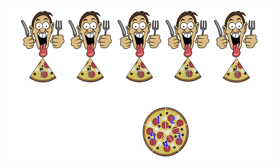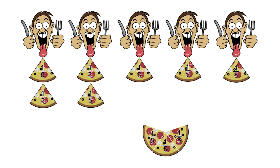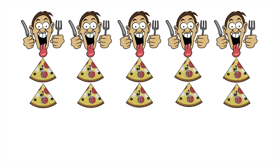We can divide the second pizza up the same way. There are five customers, so the second pizza gets divided up into five equal-sized slices. Again, each customer gets exactly one fifth of the second pizza.